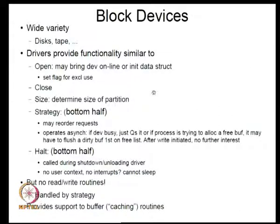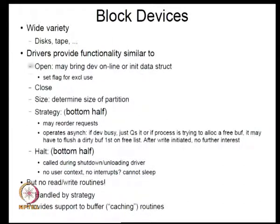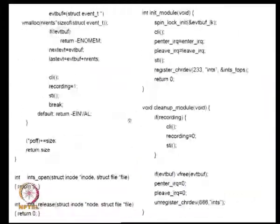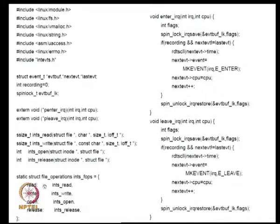Moving on to block devices: typical examples are disks, tapes, and CD-ROMs. Unlike character devices which provide open, close, read, and write routines, block device drivers provide open, close, possibly size, strategy, and halt — but usually do not have read/write routines.